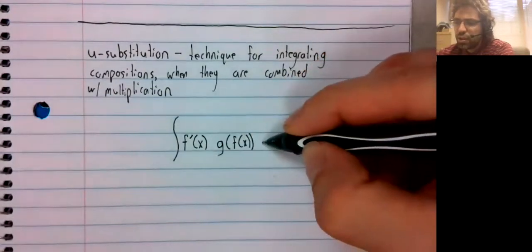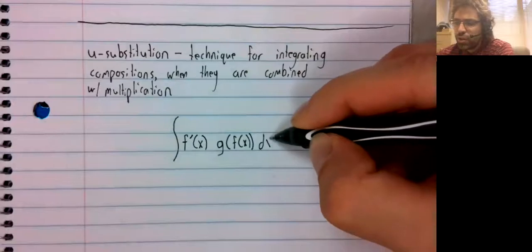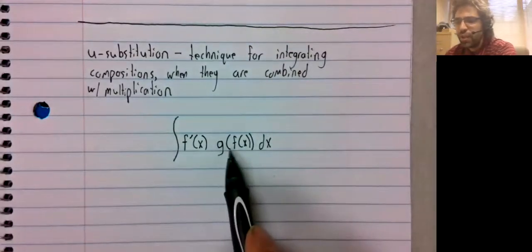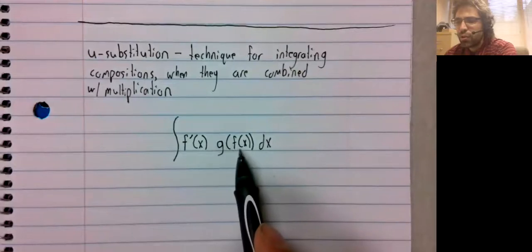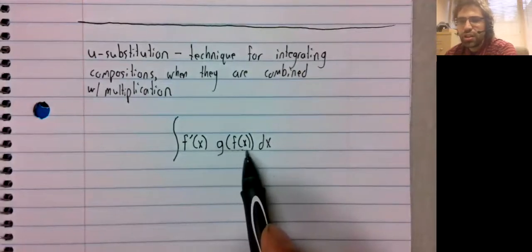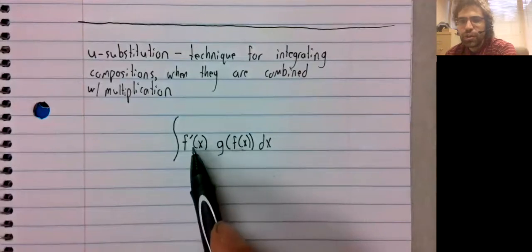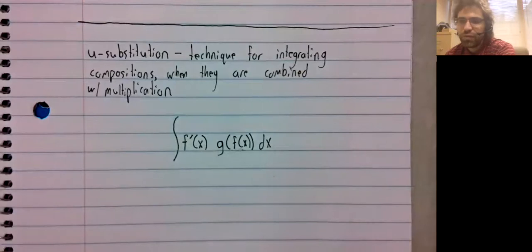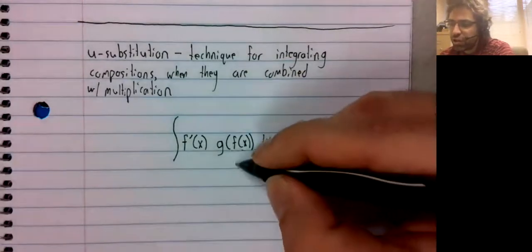In particular, you have this composition, and you've got your inside function here. And you're multiplying by the derivative of this inside function.